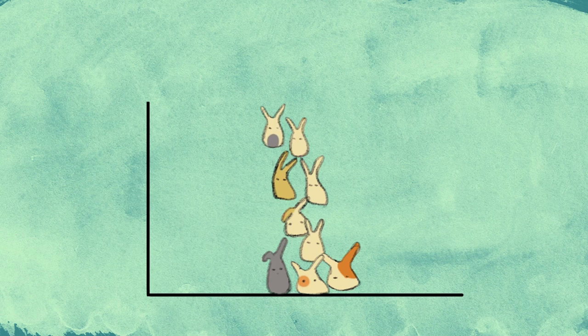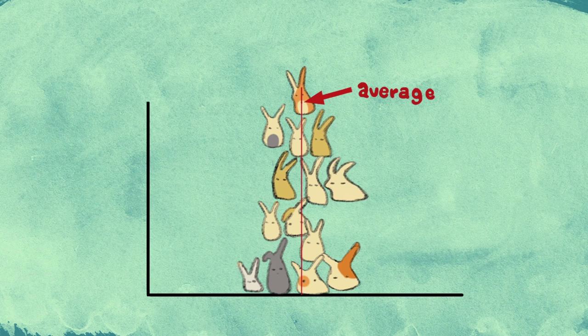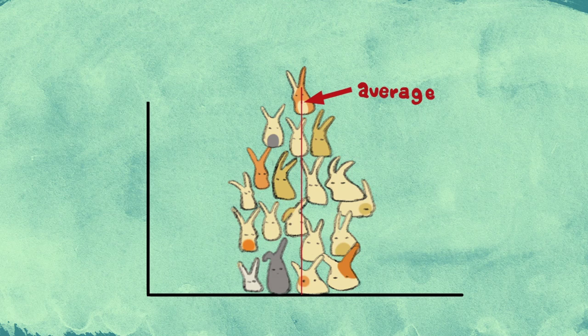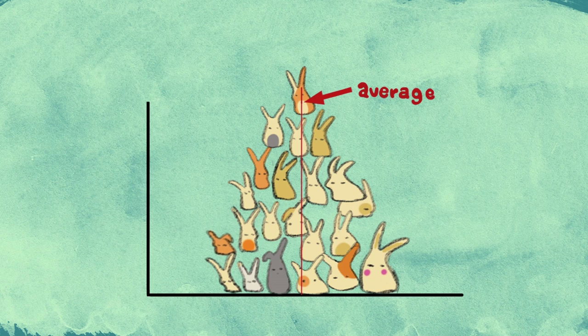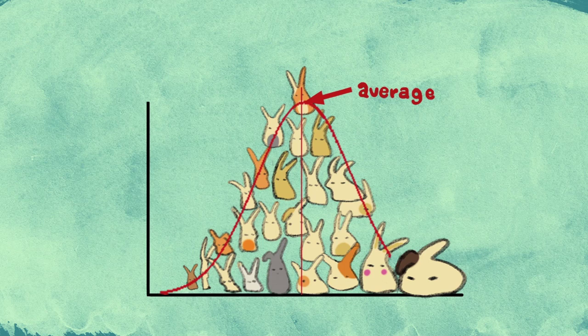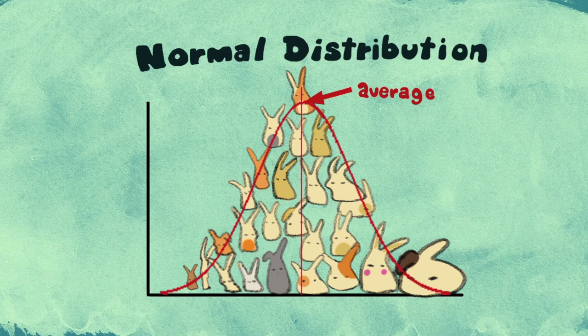If he follows this plan, he will notice that most of the rabbits are close to the average and that there are some rabbits, but not many, that are much larger or much smaller than the average. The further from the average you get, the fewer animals there are. This particular bell-shaped curve is called a normal distribution.